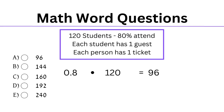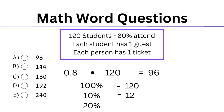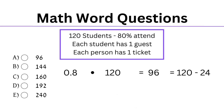If you don't have a calculator and you need to work this out, you can find 10% of 120 — simply take off a decimal place — which equals 12. As we're looking for 20%, we simply double 12 and get 24. That's the amount of students that will not attend. So we take our total student amount, 120, minus 24, and we get the same answer of 96.